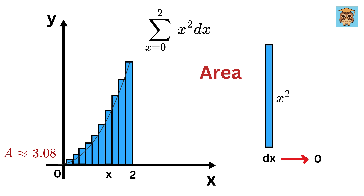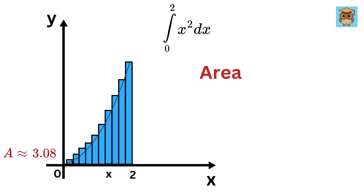Now, for very small values of DX which go to 0, instead of showing the summation symbol, we replace it with this S-looking symbol and write 0 and 2 here. So the area of this parabola, or for that matter any curve, is shown using this integration notation.